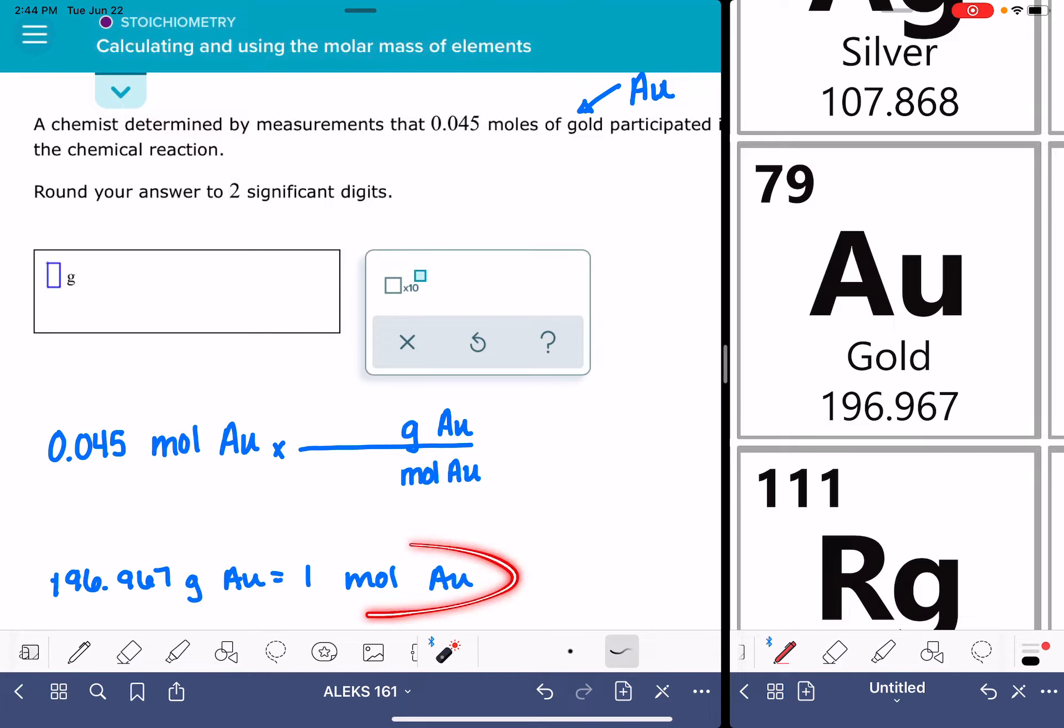And once I have this information figured out, I'm just going to transfer this information into my little conversion factor. So I've got 196.967 grams. I want to transfer that up in here, 196.967 grams. And then I also have one mole, so I want to put that information right there.